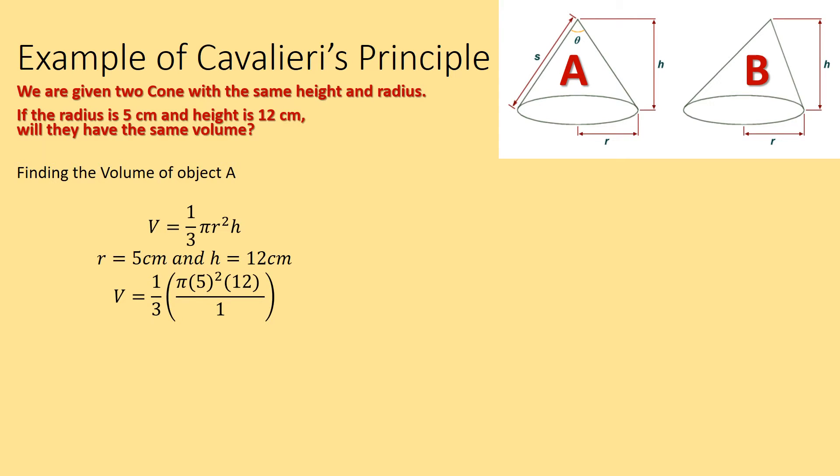Plug it in. I'm going to square the 5 and multiply by 12. Then divide by 3. I'm going to put all the top into the calculator. That's what I get. Because I'm using π, my volume is now an approximation. Divide by 3, there's a volume.